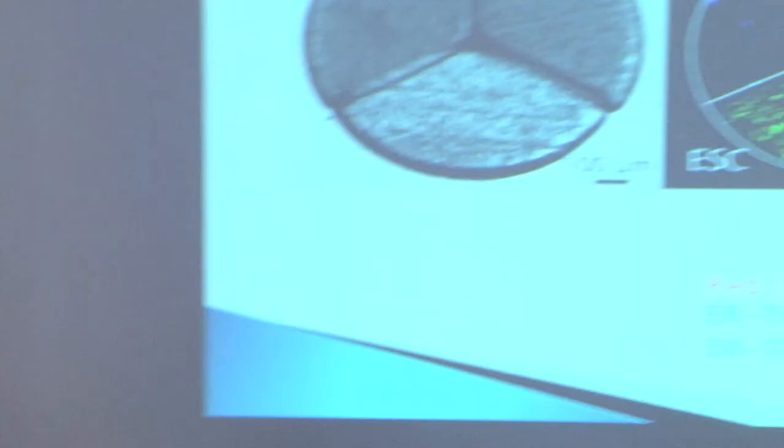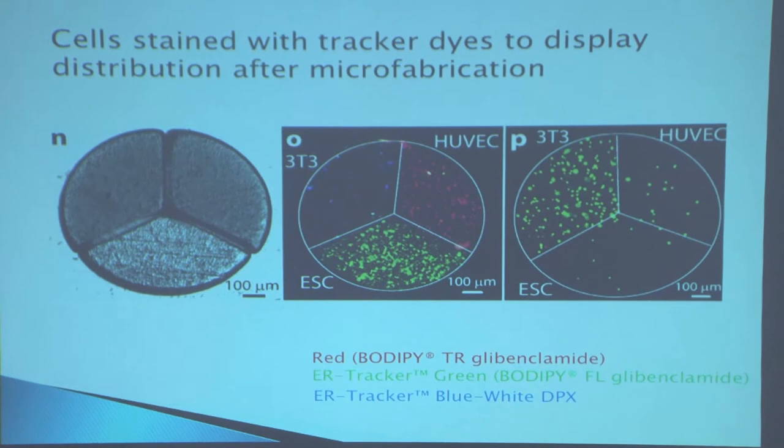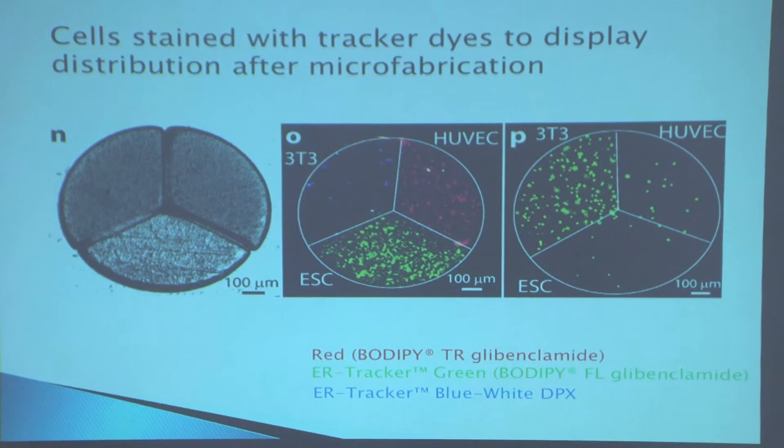We want to be able to show that we actually place the cell types that we want because this is one of our claims. Each color is a tracker for a cell. And we saw that in each compartment, indeed, we placed the cells that we wanted in the way we wanted it. If you have further questions - I didn't include any of these graphs or details, but if you have any questions at the end, please feel free.